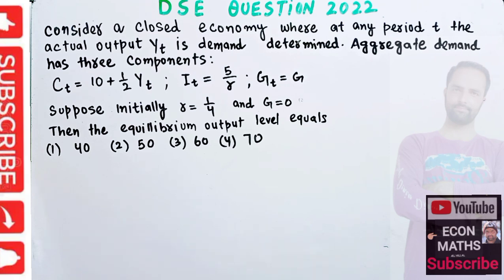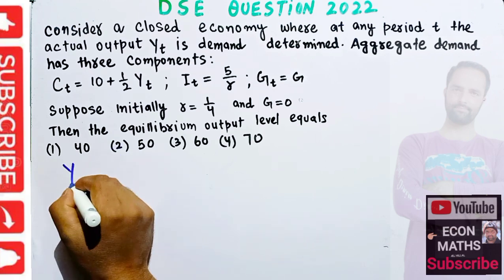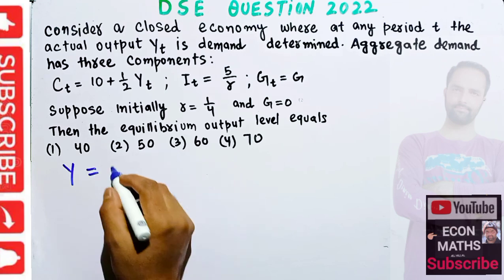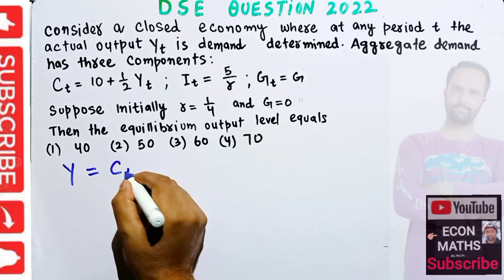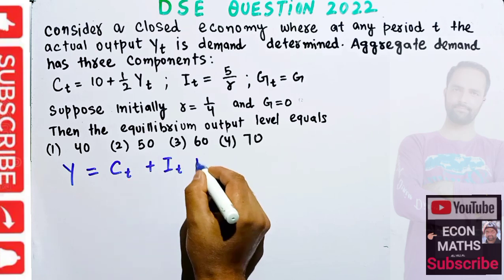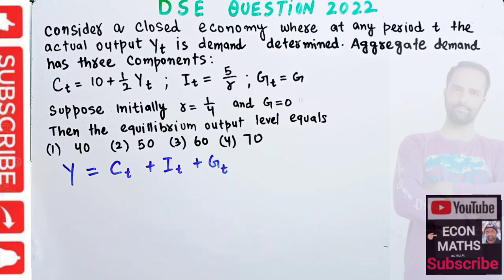We know that aggregate supply Y should be equal to aggregate demand. Aggregate demand has the components Ct + It + Gt. This is the income-expenditure model.